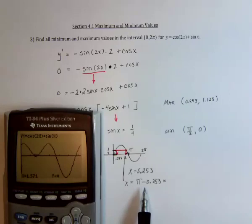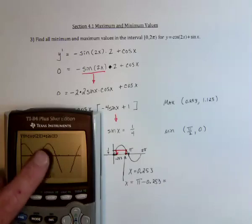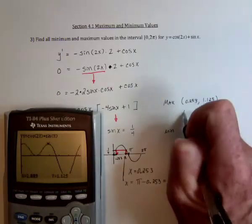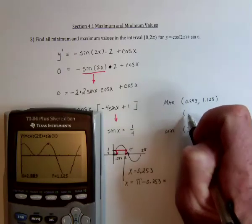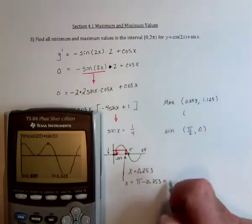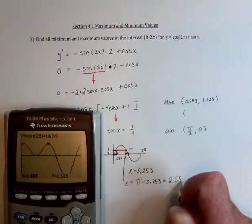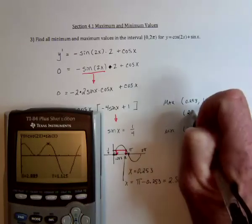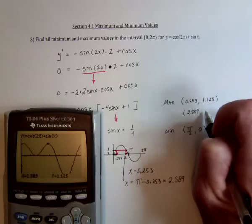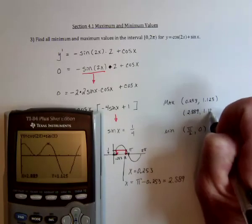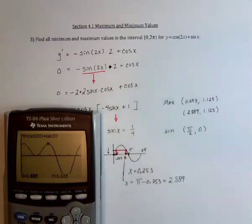And then there's this value, π minus 0.253. I'm thinking is that one. Oh, good. So we also have when x equals 2.889, and y is equal to 1.125. That's also max.